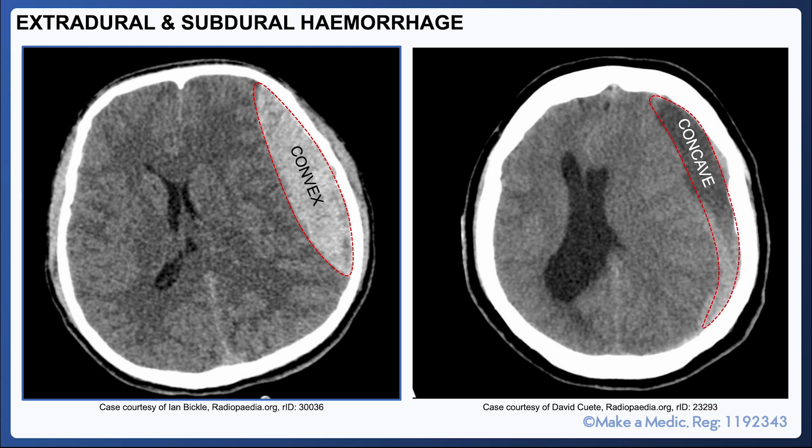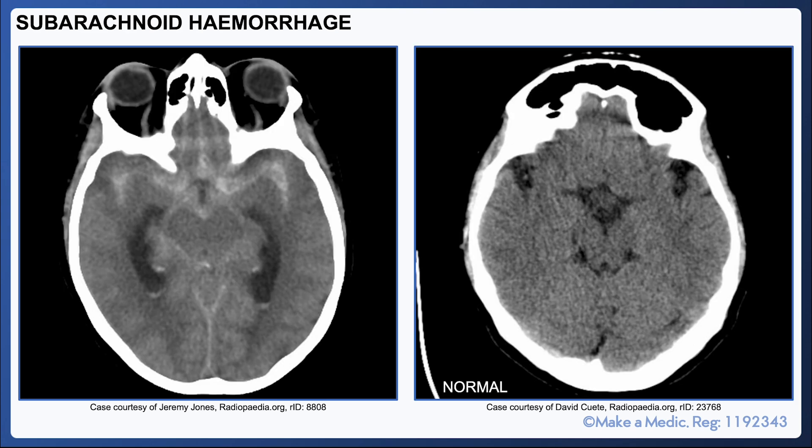Subdural hemorrhages, on the other hand, have a concave appearance. They are venous bleeds that tend to present more insidiously, so the blood may appear hypodense. In the example shown on screen, this may be an acute-on-chronic subdural hemorrhage, as the blood at the bottom is more hyperdense and hence looks fresher than the rest of the blood.